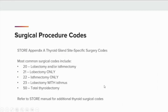CDC's thyroid gland site-specific surgery codes list the surgical codes for thyroid malignancy. The most common surgical codes include: code 20, lobectomy and/or isthmusectomy; code 21, lobectomy only; code 22, isthmusectomy only; code 23, lobectomy with isthmus; and code 50, total thyroidectomy. For additional thyroid surgical codes, refer to STORE Appendix A.